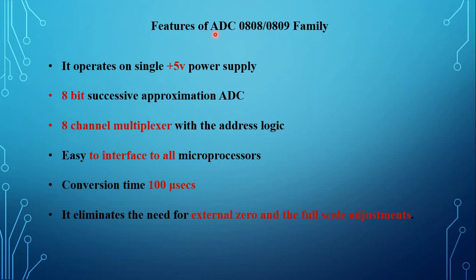The ADC performs two basic operations. The first one is quantization — mapping a continuous signal into one of many possible states. The second one is coding, which is defined as the assignment of a binary code to the input state.